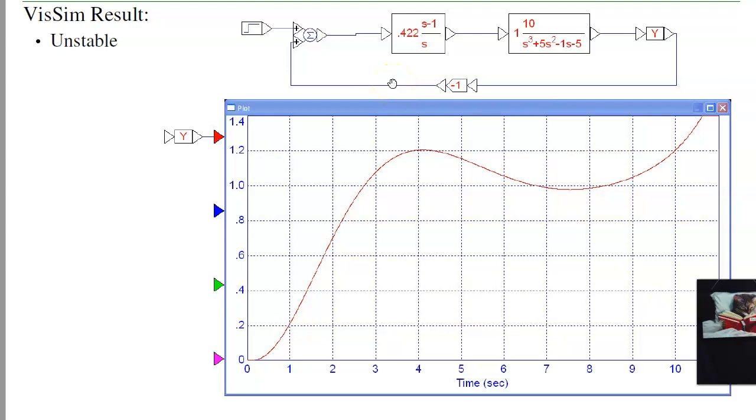Now let's throw it in VisSim. Here's my plant. Here's my compensator. And note, I don't cancel that pole. I don't not include it. It's a double negative. But I do include that pole in the plant, include the zero in the compensator. These should cancel. And everything's fine. Here's my step response. 20% overshoot settles out and then blows up.